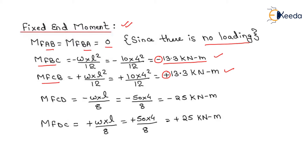For span CD, due to the point load acting at the center, the fixed end moment MF_CD equals −WL/8, which gives −25 kN·m. Similarly, for the fixed end moment at DC, the value is +25 kN·m. We have now computed all the fixed end moments: AB, BA, BC, CB, CD, and DC.